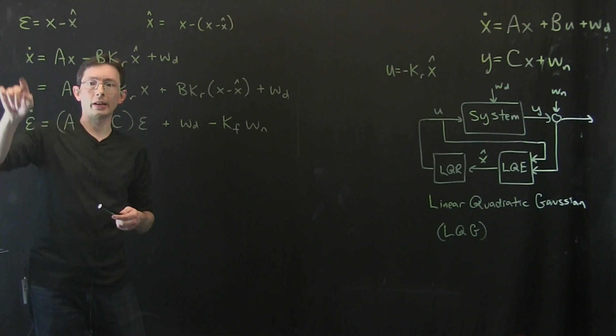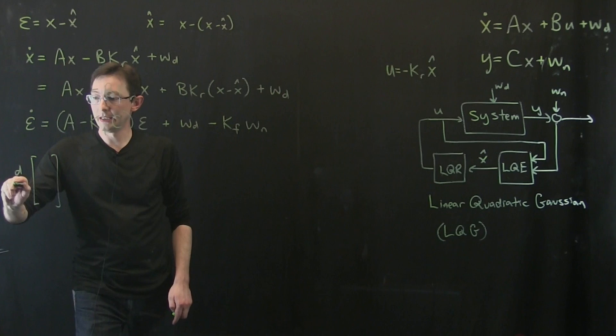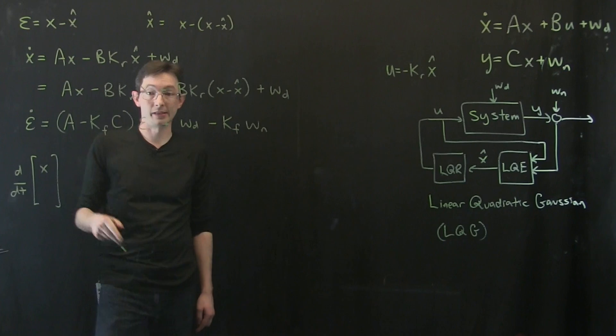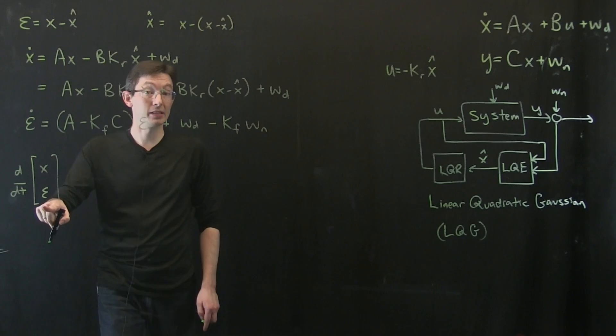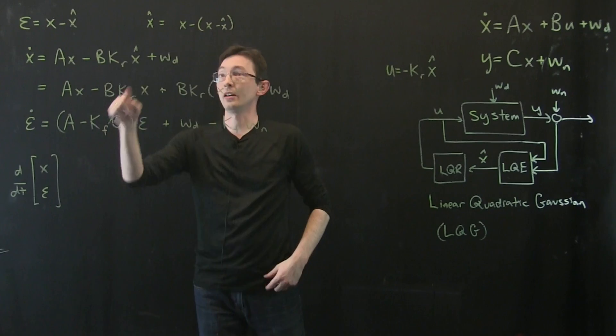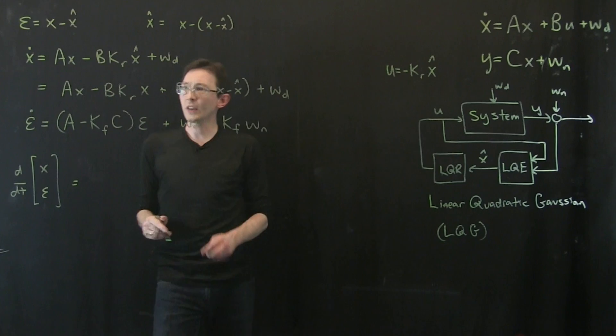And so now what I want to do is I want to combine these two. So I want to build a new state space equation, d dt of my true state x. This is the actual state of the actual system. I want it to be stabilized. And the error of my estimation, I also want this to be stabilized. So x is my honest to goodness full state. Epsilon is my estimation error. So I want both of these to be stable.